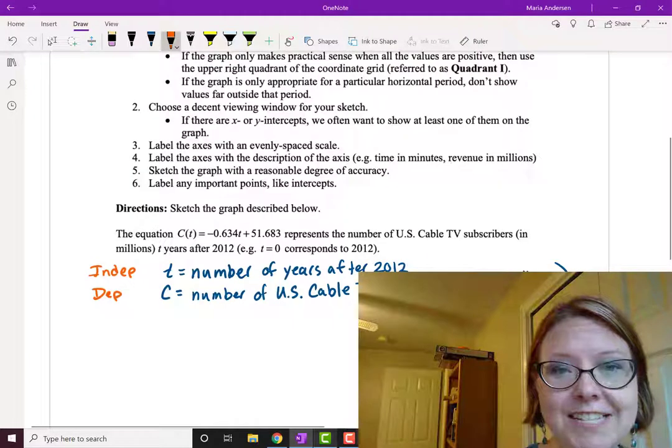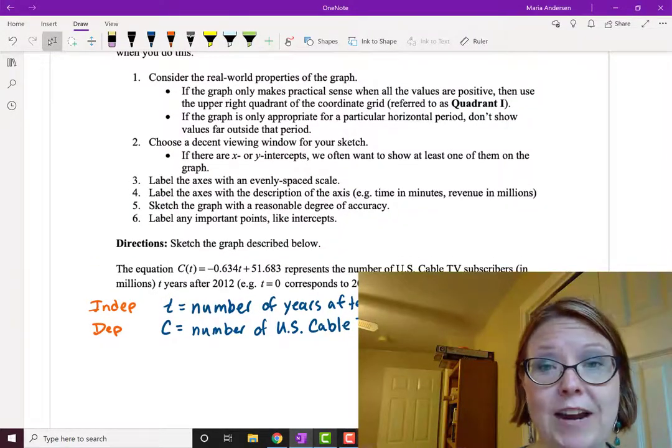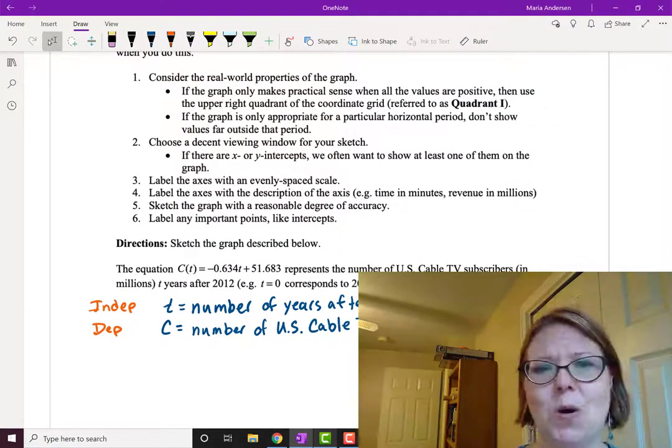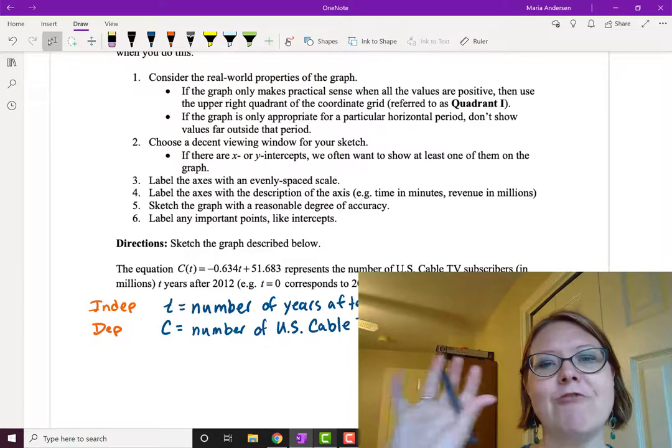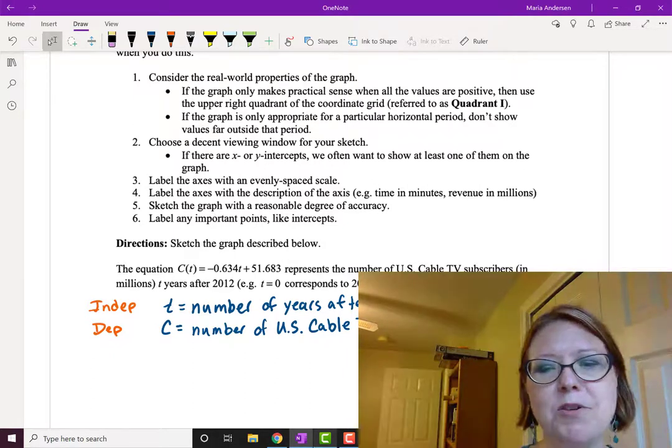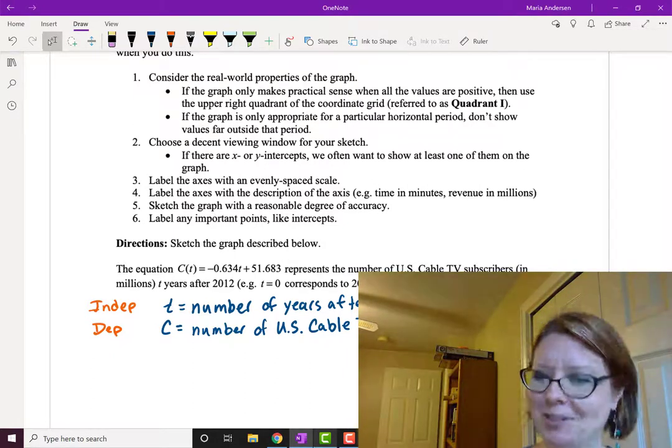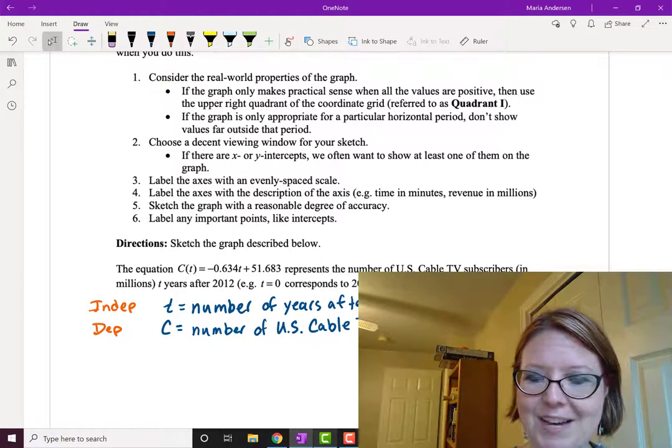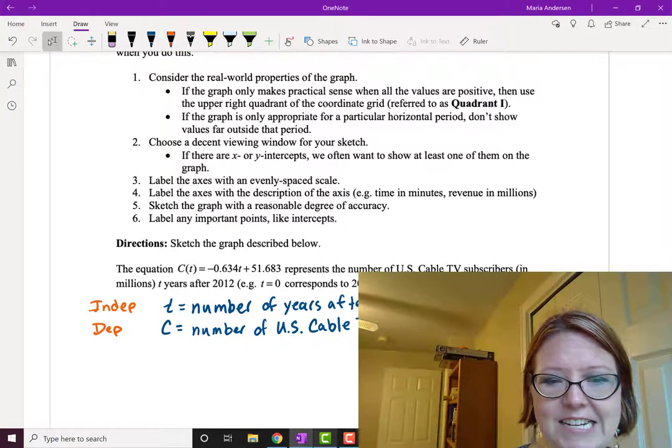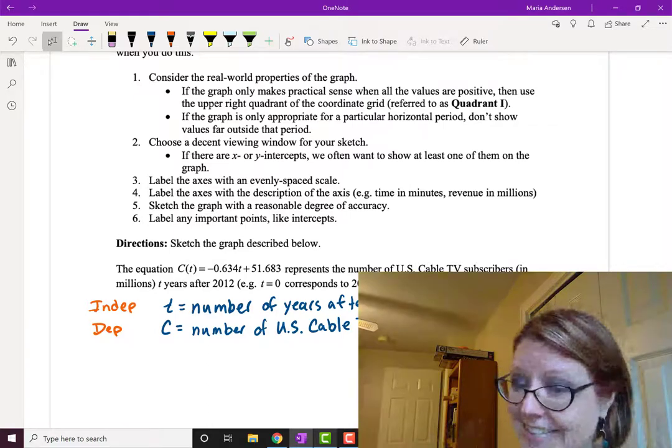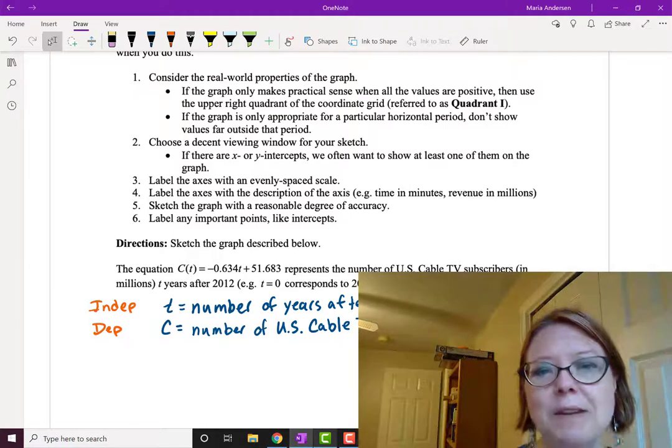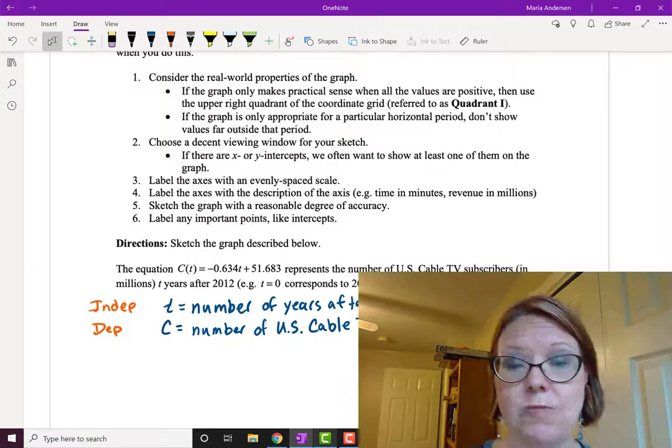The first thing to consider when we're drawing a real world graph is whether it makes sense to just draw quadrant one, where everything is positive. The number of years after 2012 is positive—we're not going back in time, only forward. And the number of U.S. cable TV subscribers can't go negative. So it will be in quadrant one.